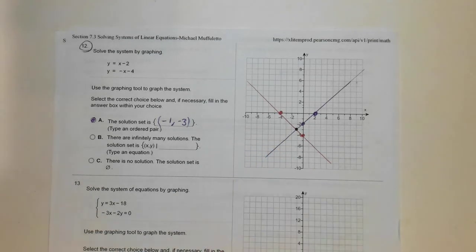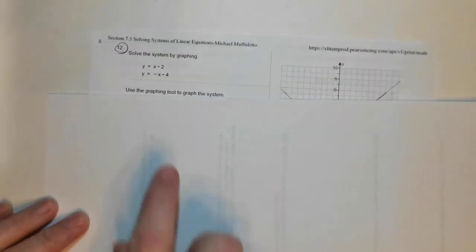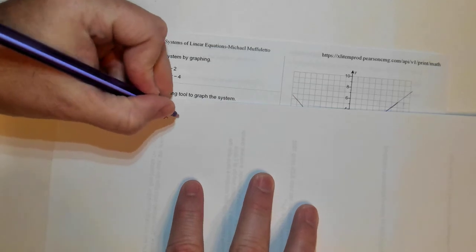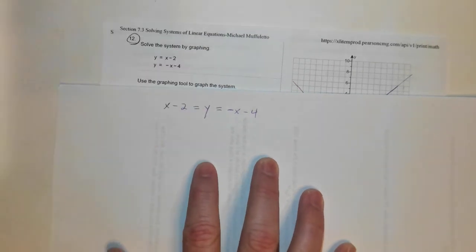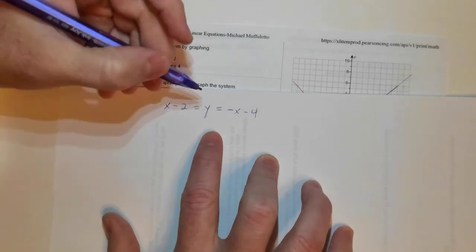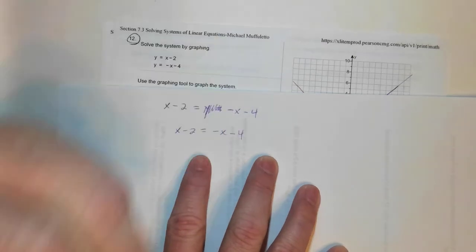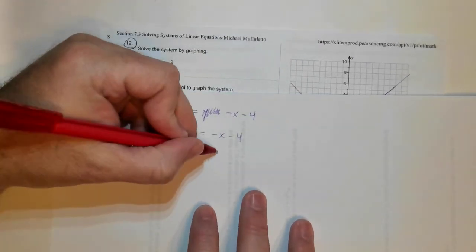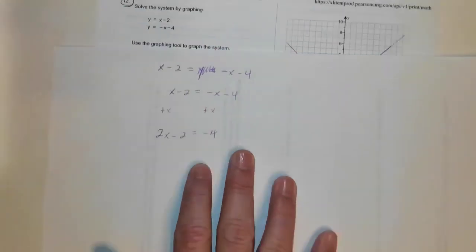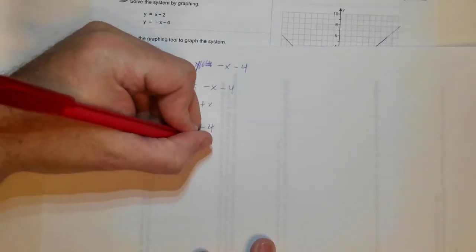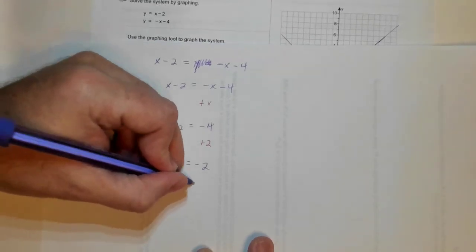I did the following. I said, because these are both solved for Y, I can set them equal to each other. So I could do this just to double check my work if I wanted to. So since I set these equal, I get X minus 2 equals minus X minus 4. I'll solve this for X. I'm going to add X to both sides. I get 2X minus 2 equals minus 4. I'm going to add that 2. So I get 2X equals minus 2. And then if I solve that, I get X equals minus 1.